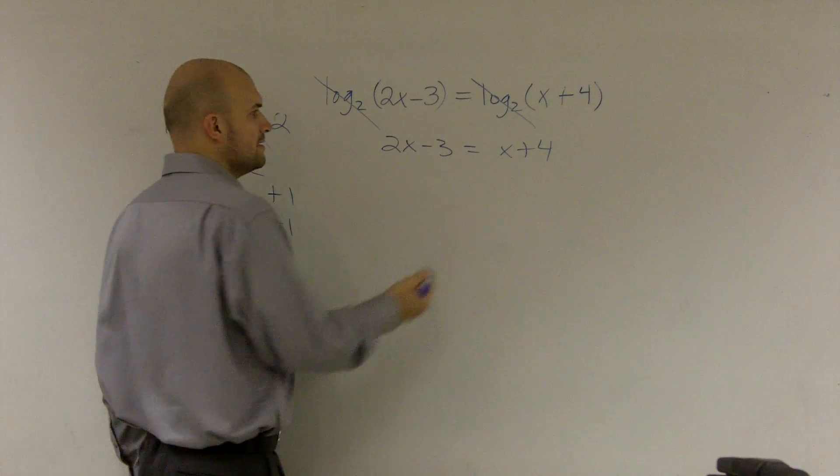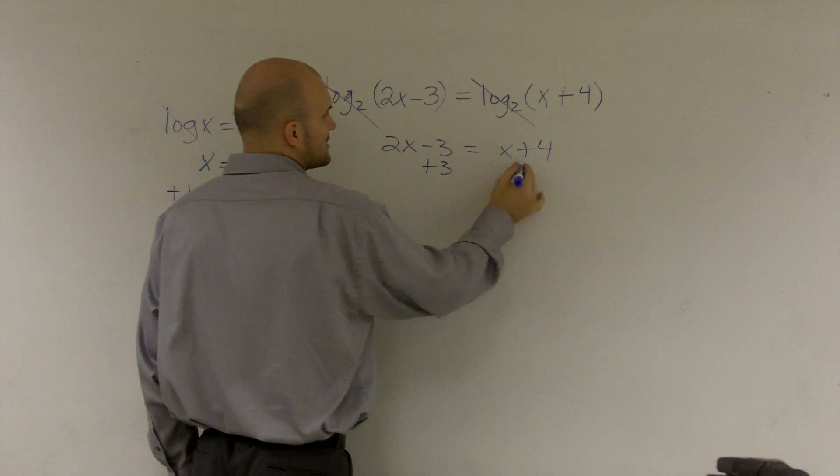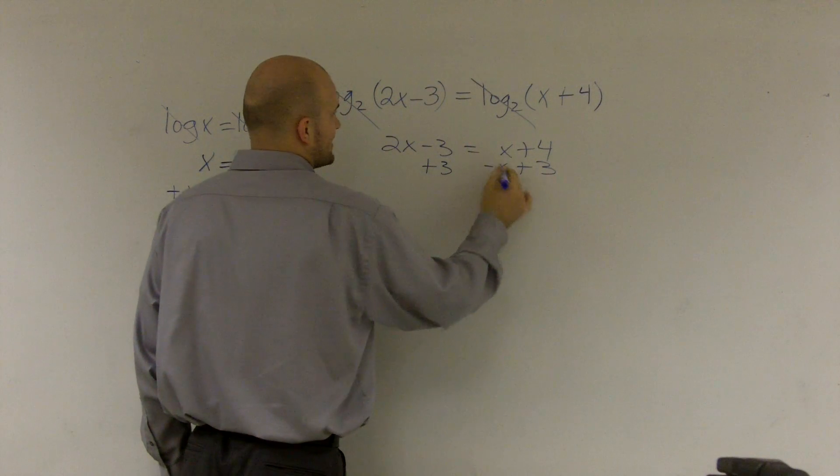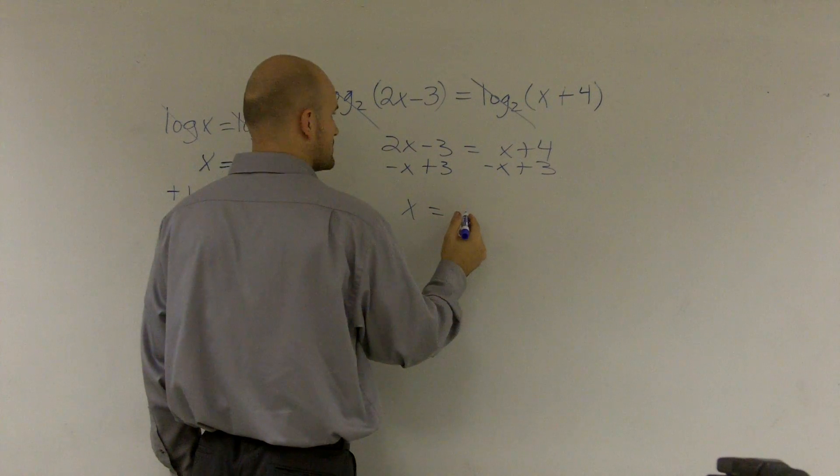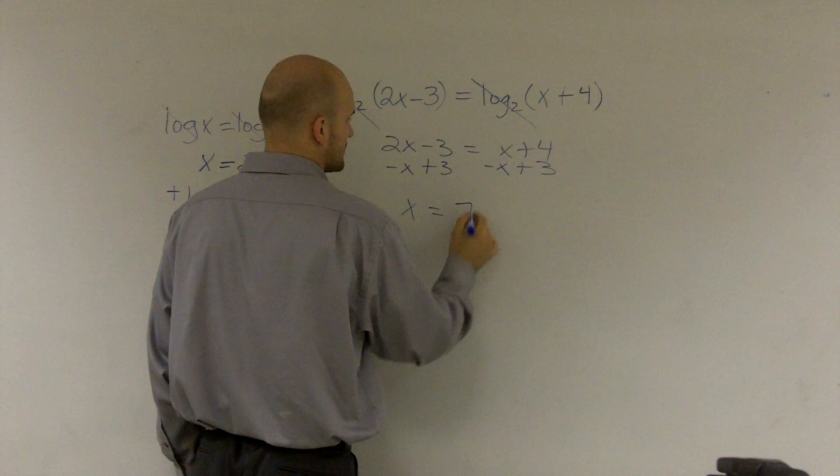Then, now solving my equation, I'll add a 3 to this side, subtract an x on both sides, x equals 7.